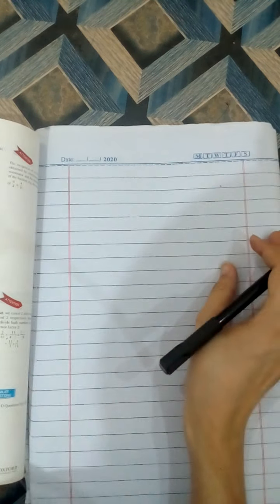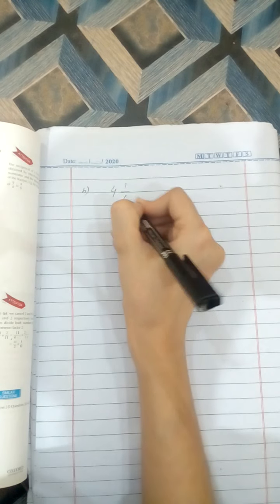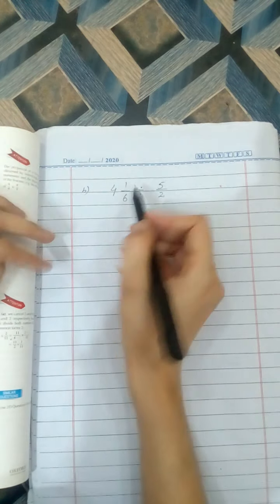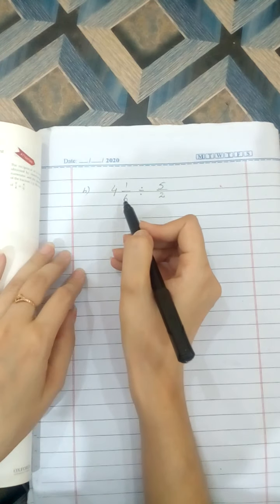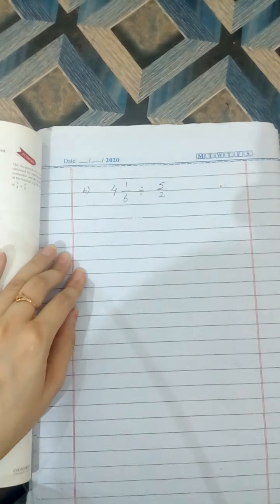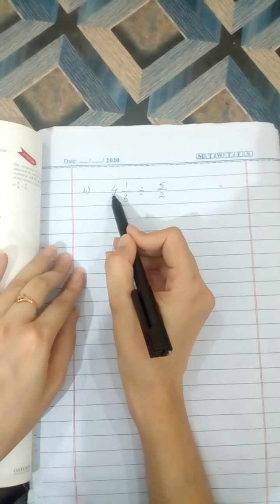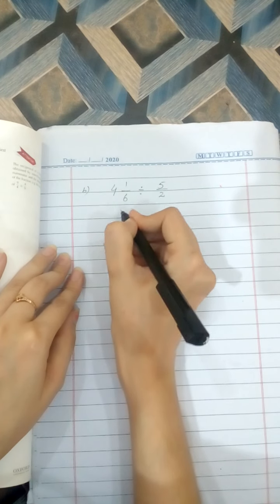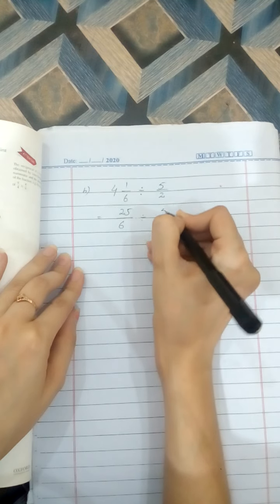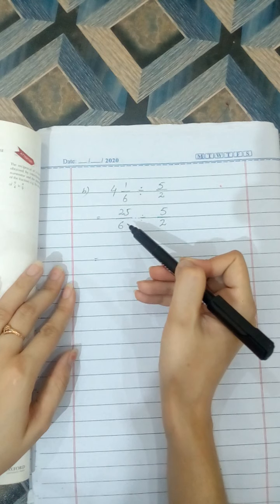So first of all, write the statement of question B: that is 4 whole 1 by 6 divided by 5 by 2. First of all, you know that very well, we make it a fraction. 6 times 4 is 24 plus 1 is 25. So 25 by 6 divided by 5 by 2.